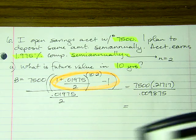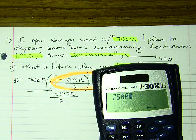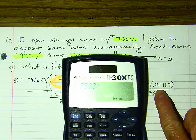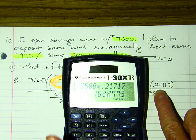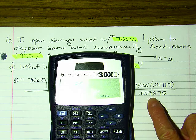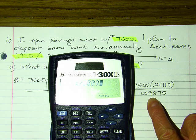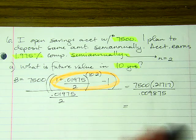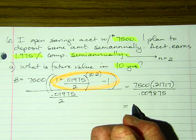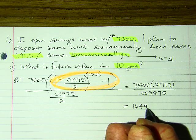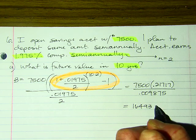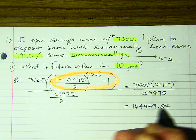Now entering: 7,500 × 0.21717 ÷ 0.009875. And I get $164,939.24.